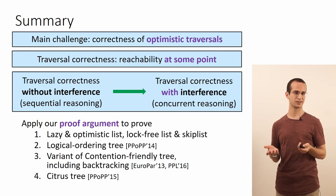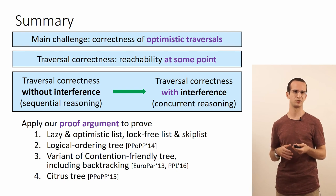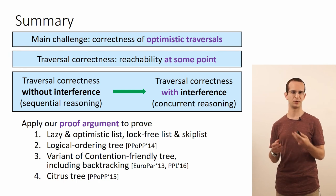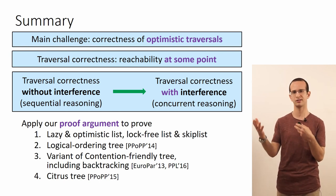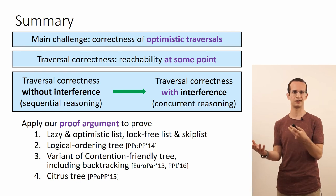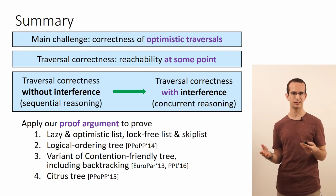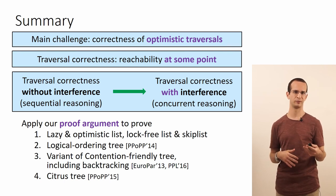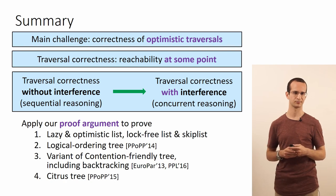So overall, we discussed the challenge of optimistic traversals — traversals that perform little or no synchronization — and identified this as the main ingredient in the proofs of many concurrent data structures. We formulated traversal correctness as guaranteeing reachability at some point in time, and we provided a simple proof argument for traversal correctness, which we apply to prove the linearizability of several interesting concurrent data structures.